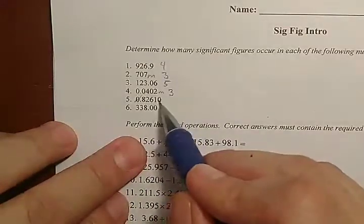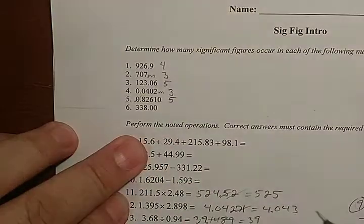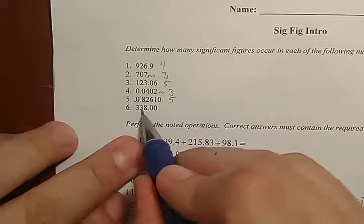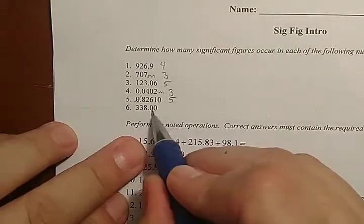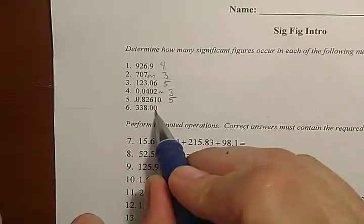So, it measured 82610, and that is five significant figures. So, what about this one? It measured 3, it measured 3, it measured 8, pretty obviously, and we said the zeros after a decimal don't really count for the calculator, so there's no point for the calculator.